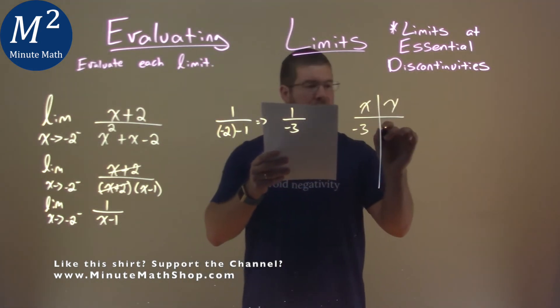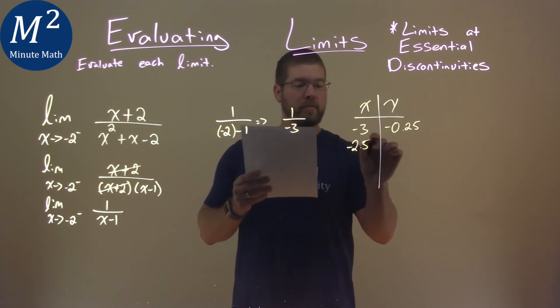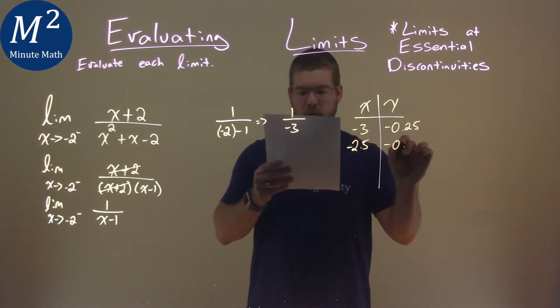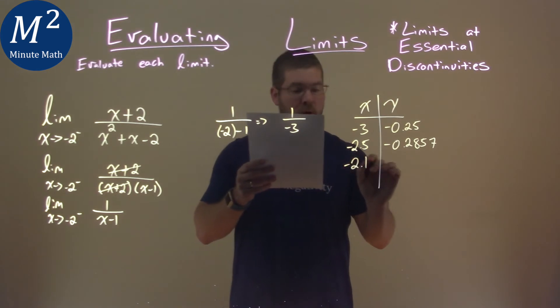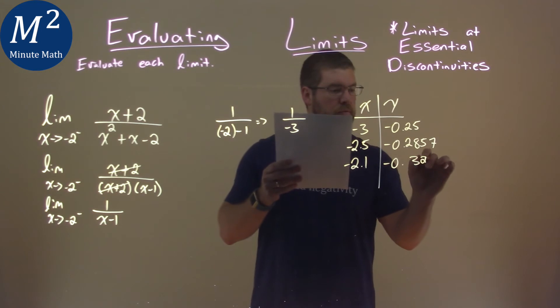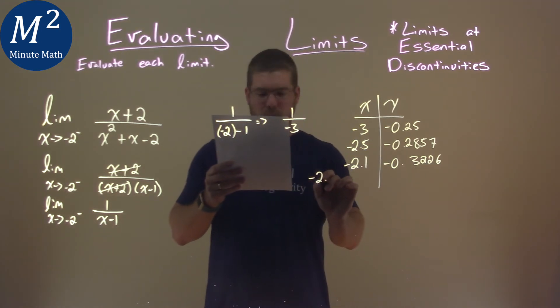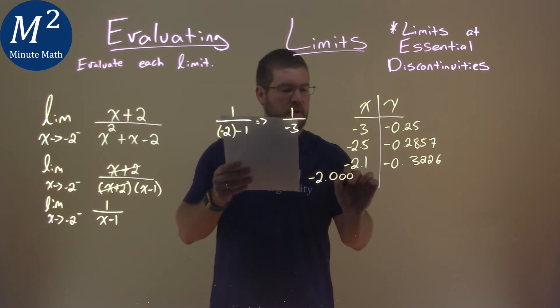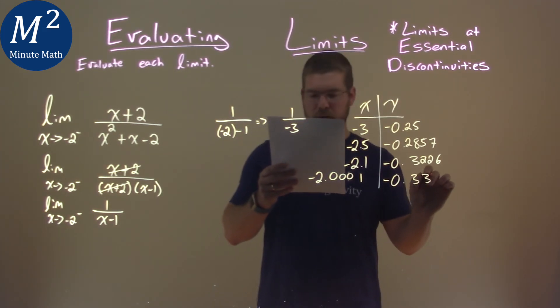Negative 3 goes in, we get negative 0.25. Negative 2.5 in for x, we get negative 0.2857. Negative 2.1 in for x, negative 0.3226, and these are all approximate. And then negative 2.001, we had negative 0.33333.